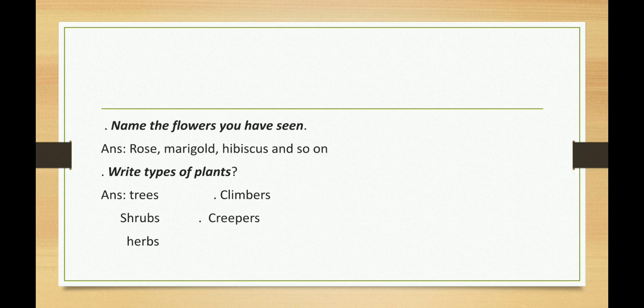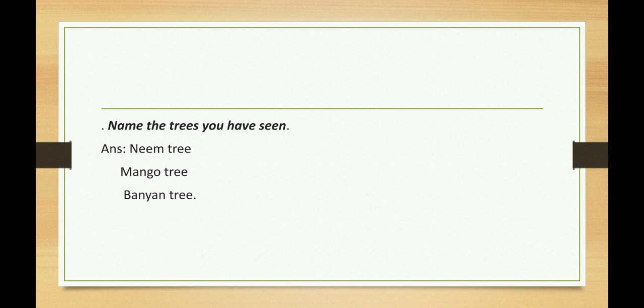Next: Write types of plants. Do you know what are the types of plants? Yes, there are five types of plants: Trees, Shrubs, Herbs, Climbers, and Creepers. These are the types of plants.